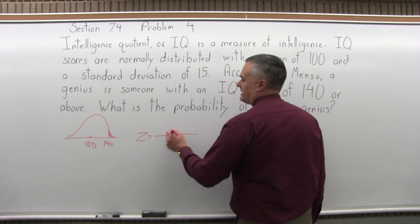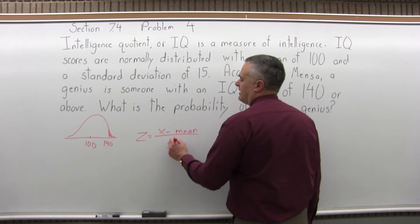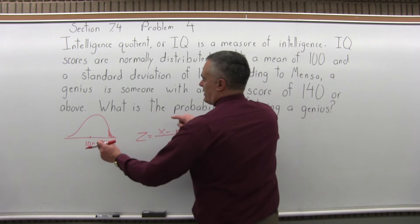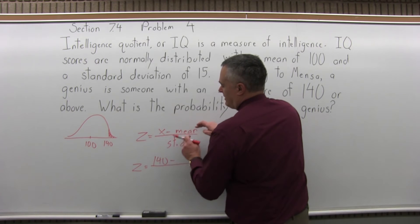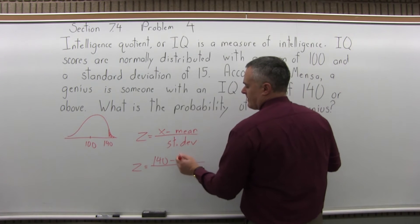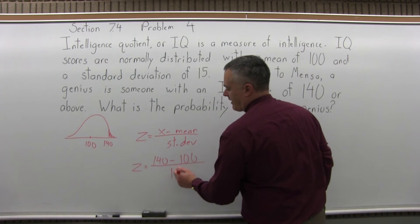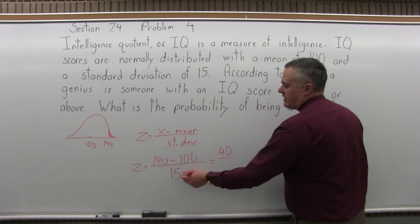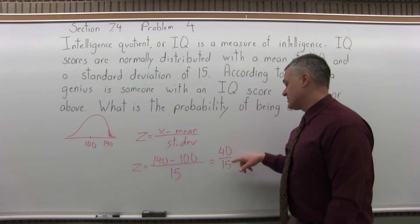The z-score formula is z equals x minus the mean divided by the standard deviation. So for this particular problem, z equals x — the number we want to find the z-score for is 140 — minus the mean of 100, over the standard deviation of 15. Doing the math, 140 minus 100 is 40, over 15 on the bottom.